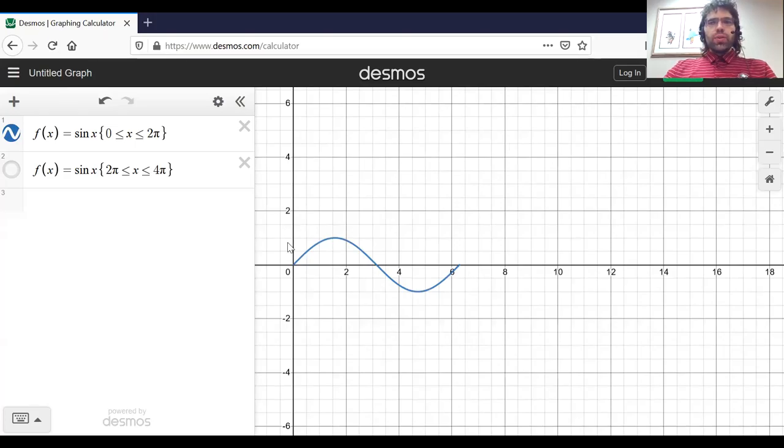So here's what the curve looks like on an interval of length 2π. See, we're going from zero to 2π. And 2π to 4π is also an interval of length 2π.